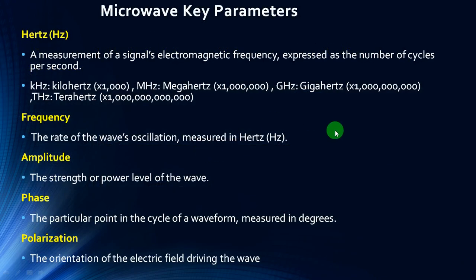Microwave key parameters. The parameters are: Hertz, frequency, amplitude, phase, and polarization. Hertz is the measurement of a signal's electromagnetic frequency, expressed as a number of cycles per second — the rate of wave oscillation measured in Hertz. Amplitude is the strength or power level of the wave. Phase is the particular point in the cycle of a waveform, measured in degrees. Polarization is the orientation of the electric field driving the wave.